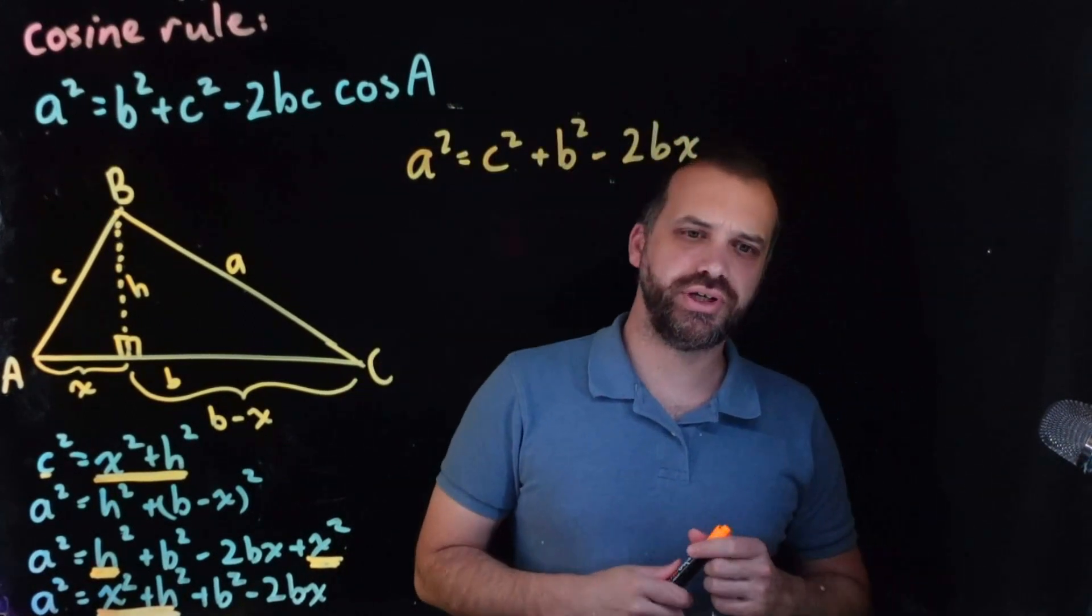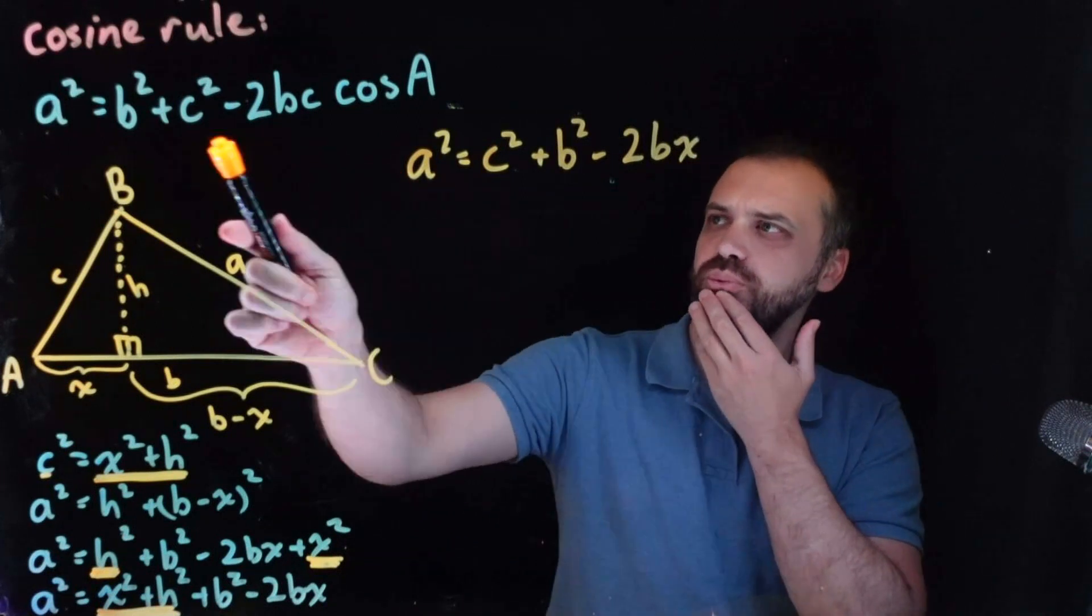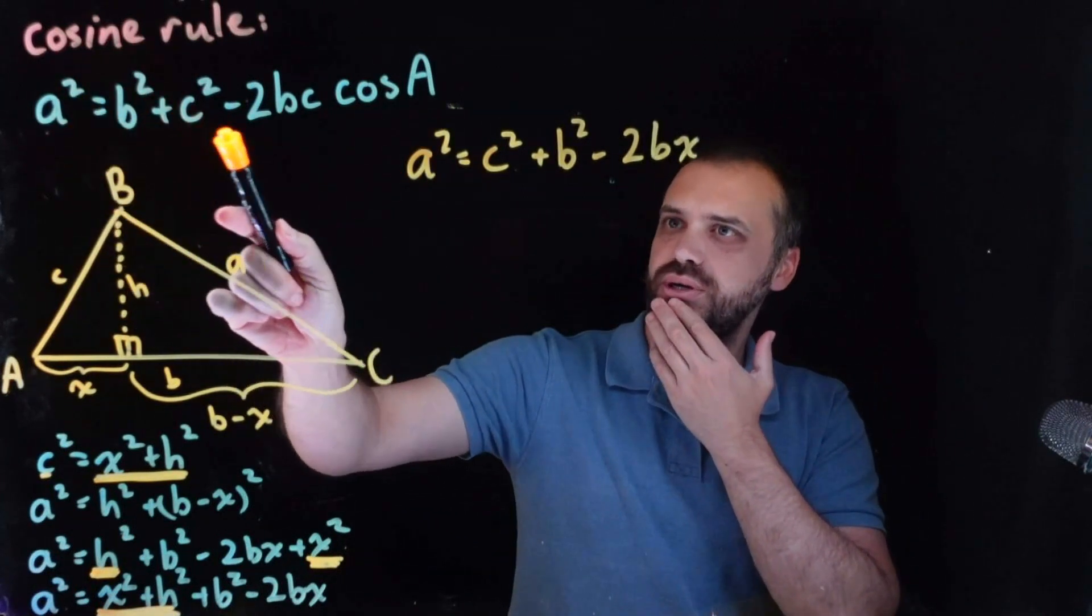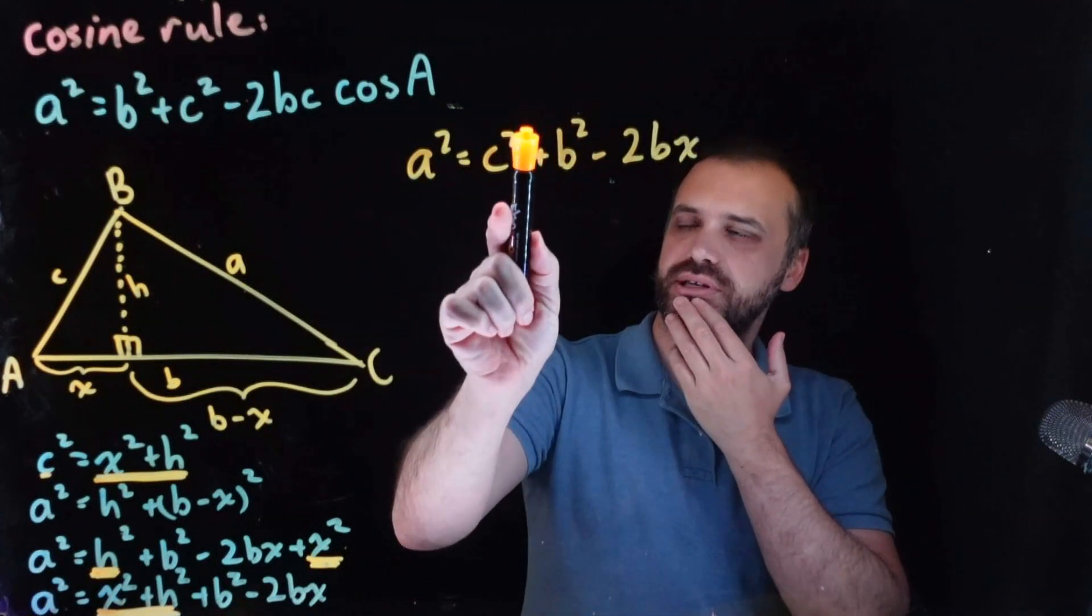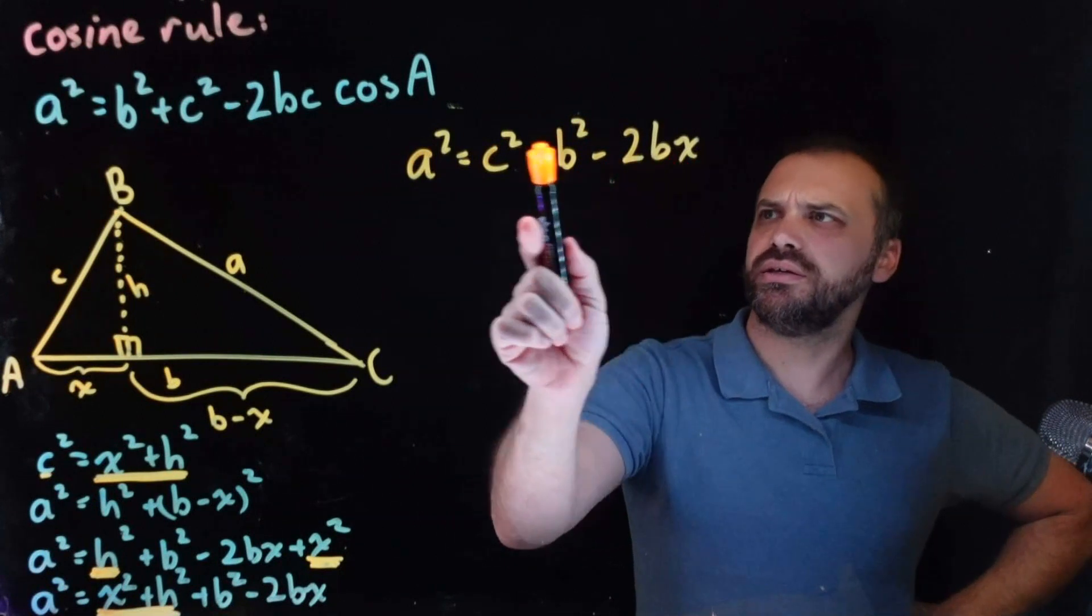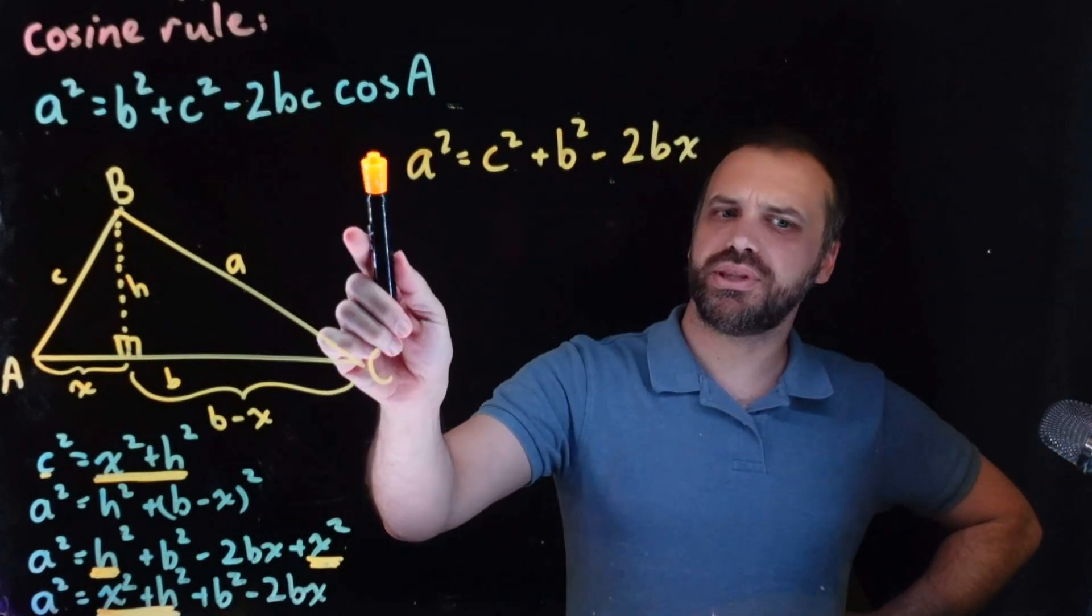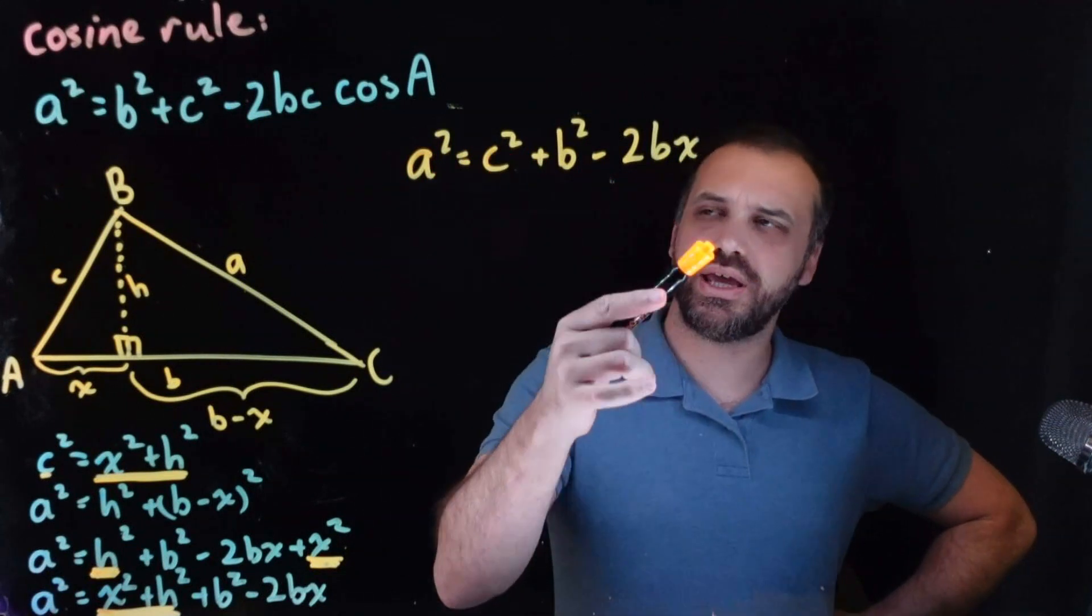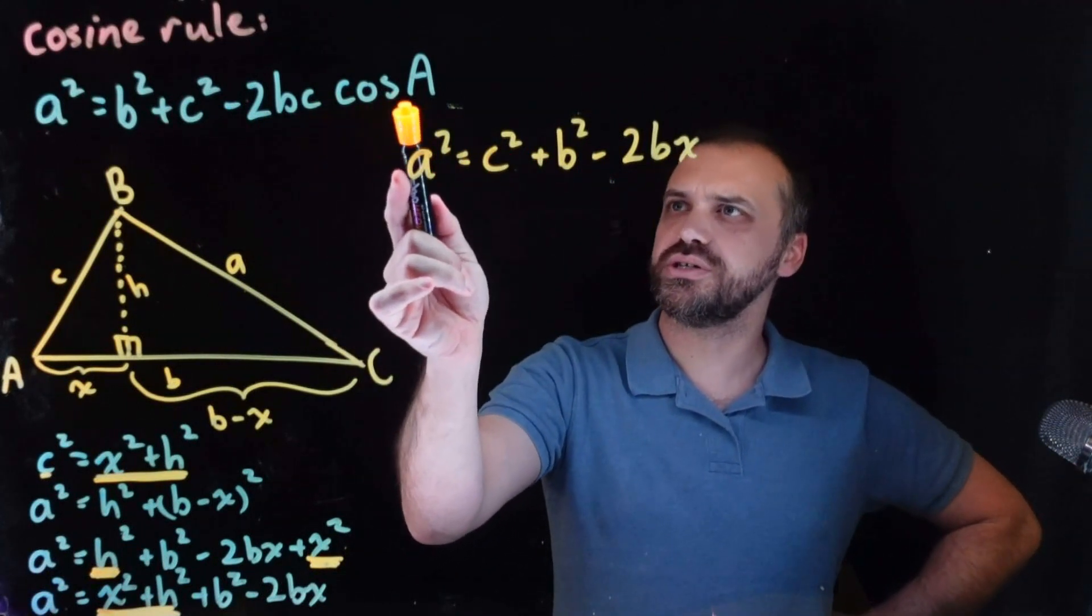Great. This is looking really good, right? If we look at what we're trying to prove, A squared equals B squared plus C squared. B squared plus C squared. And then I've got negative 2B, but then I've got this X sitting here, which is a problem because I don't want X. I want C cos A.